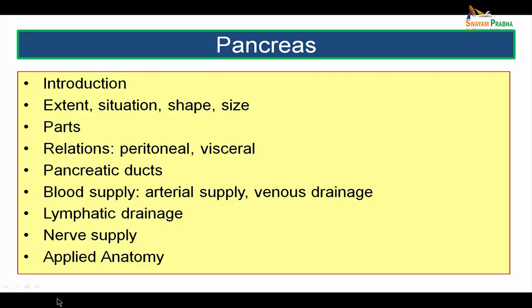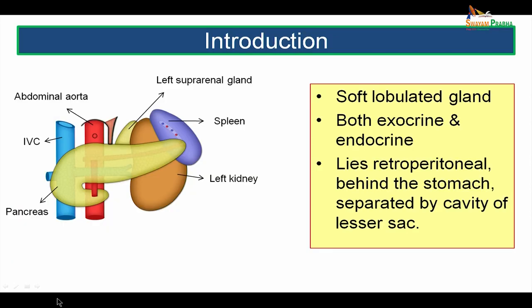We will be covering the pancreas under these following headings: introduction, extent, situation, shape and size, parts of pancreas, the relations which will include peritoneal as well as visceral relations, the pancreatic ducts, the blood supply including arterial supply and venous drainage, the lymphatic drainage, the nerve supply, and the applied anatomy points.